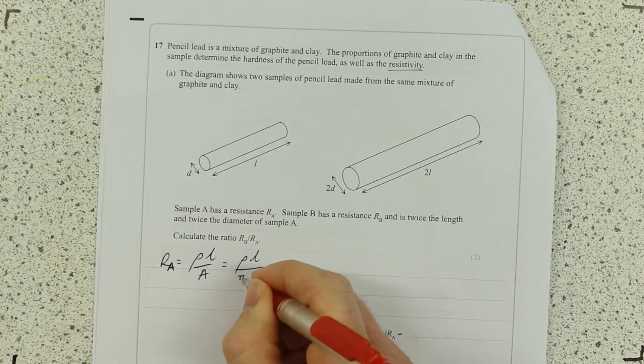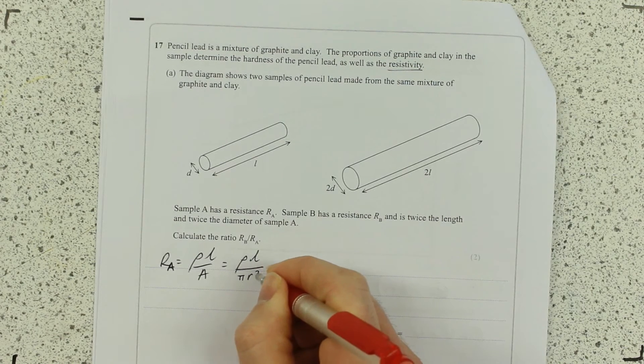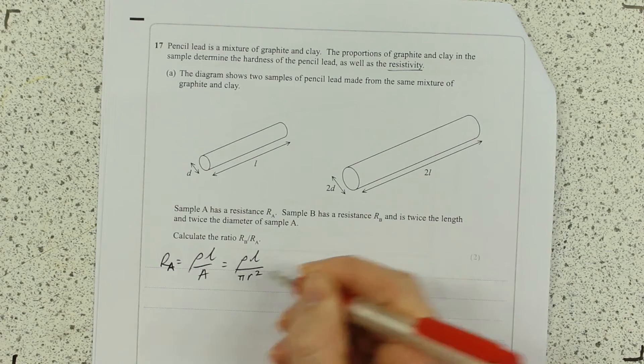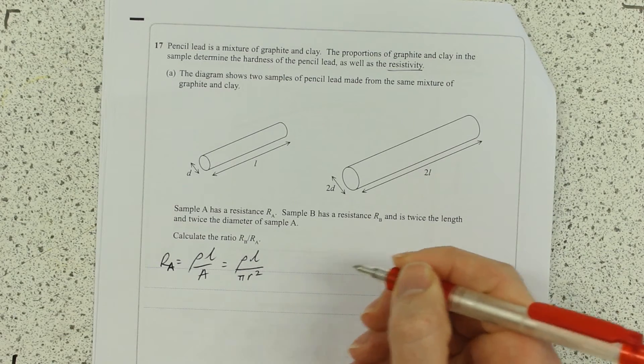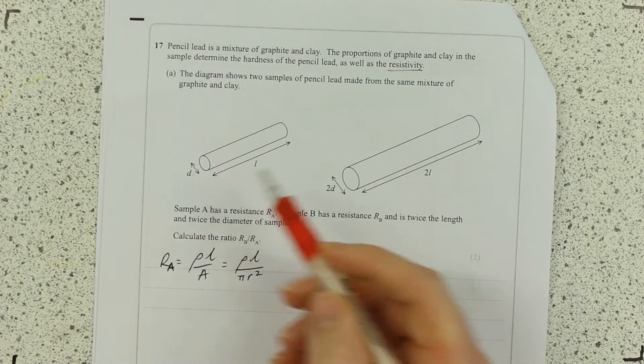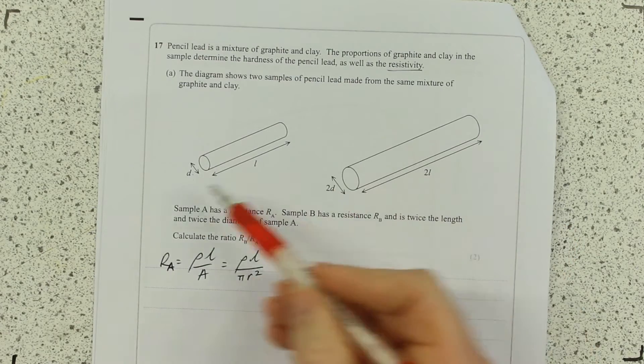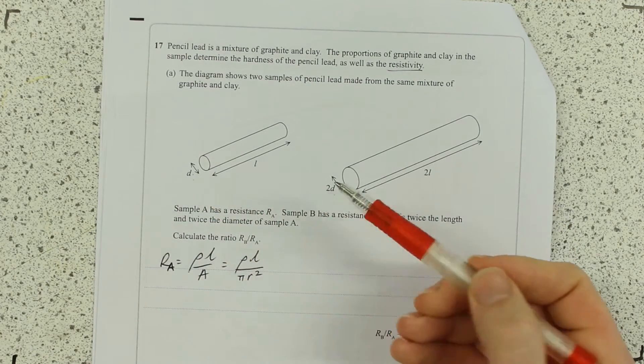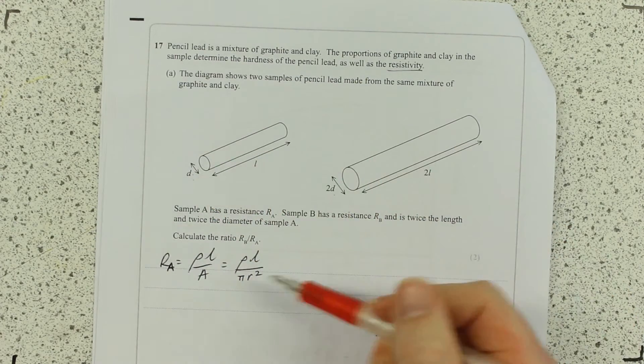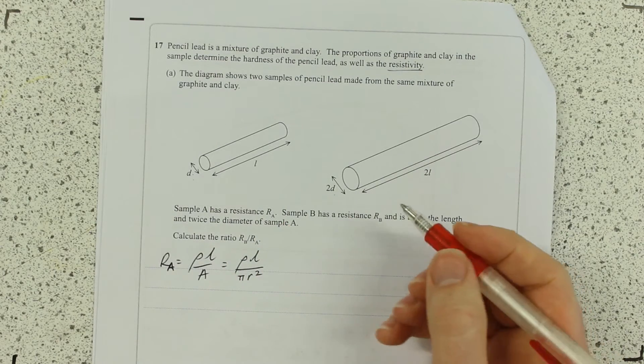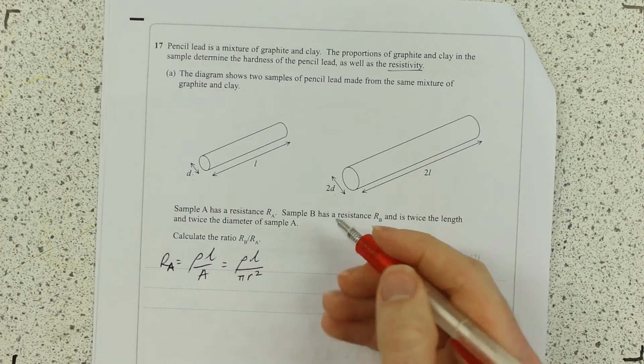π R squared is π D over 2. But I'm just going to leave R in there because if I double D, then I double R. So that's fine. Don't need to complicate things any more than that. And π will get rid of in a second, as you'll see.